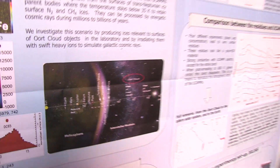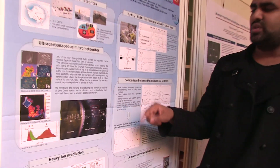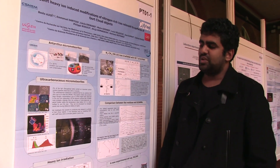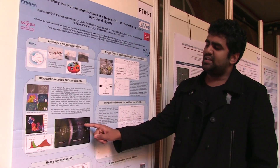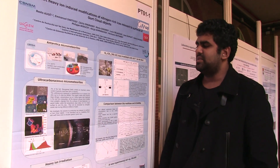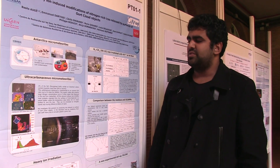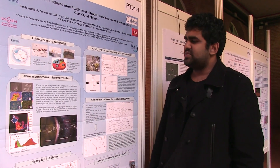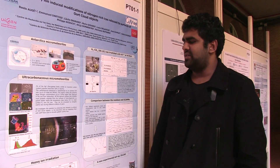What we believe is that one of these objects was living in the Oort Cloud and was irradiated by galactic cosmic rays during millions to billions of years. Then this object travelled back to the inner solar system and became a comet, and this comet injected some matter on Earth. The job I had to do during my thesis was to check if this scenario was valid or not.